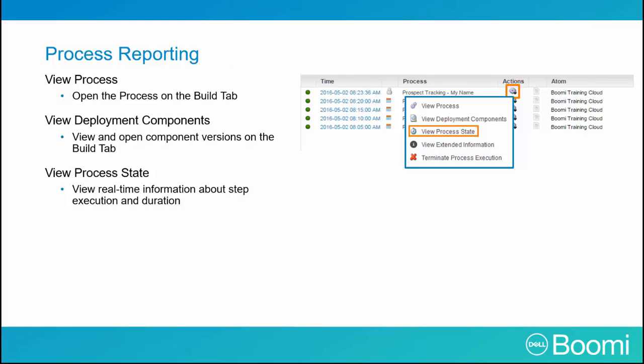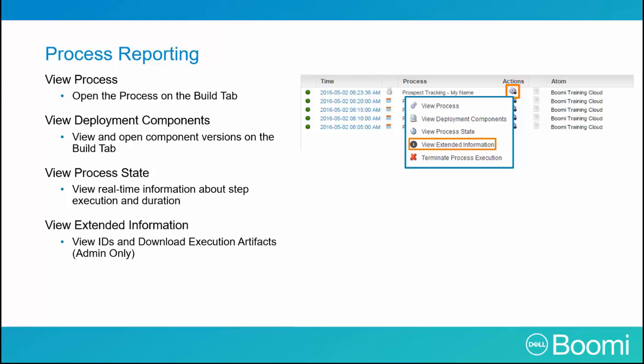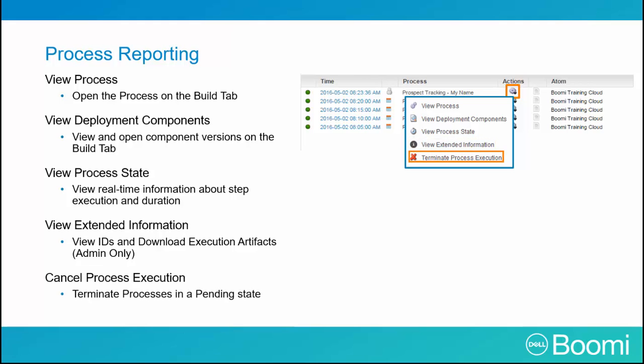You can view the process state, which will show real-time information about the step execution and duration. You can view the extended information — for this you need administration privileges to view the execution, process, atom, and deployment IDs, and the ability to download execution artifacts. Finally, you can cancel a process execution, which would end processes in a pending state.